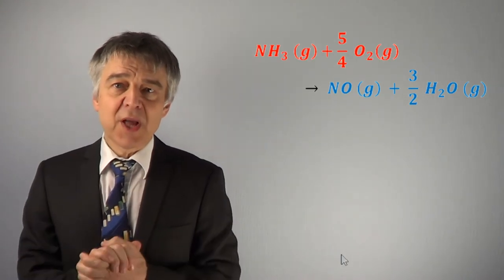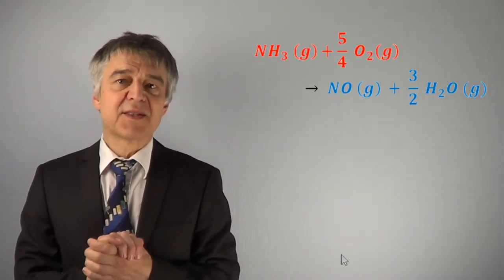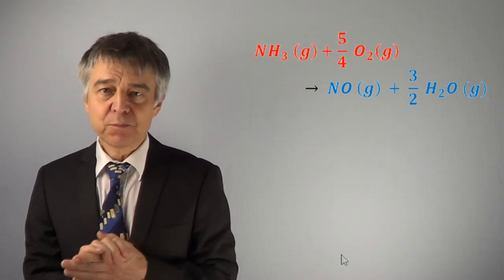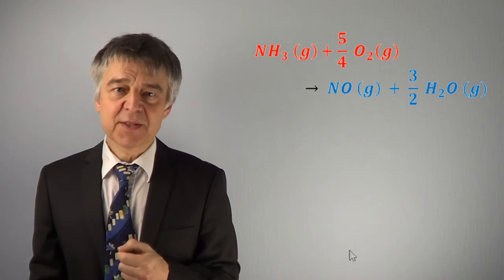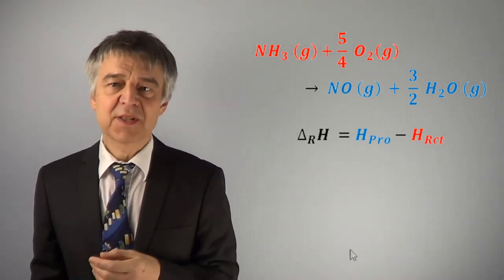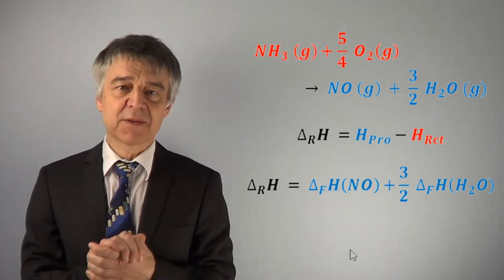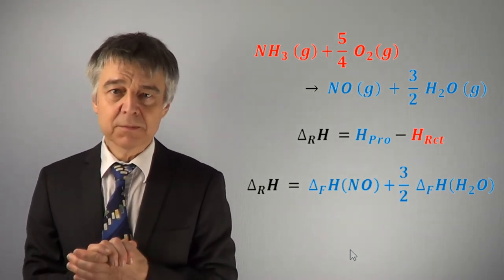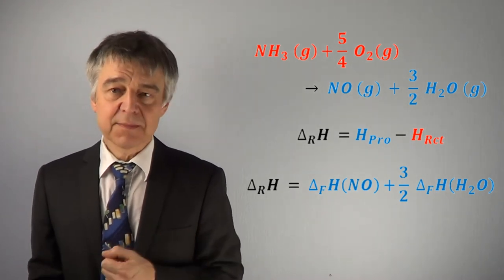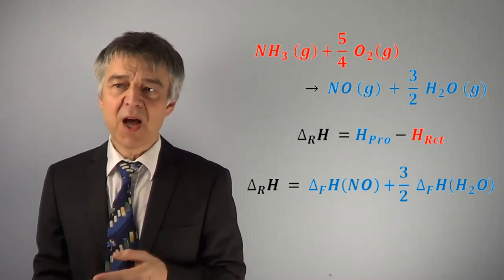Again, the reaction enthalpy is obtained as a stoichiometric sum of the enthalpies of formation. The enthalpies of formation of the product is one mole of nitrogen monoxide plus three-halves moles of water minus the enthalpies of formation of the reactants, one mole of ammonia plus five-fourths moles of oxygen.